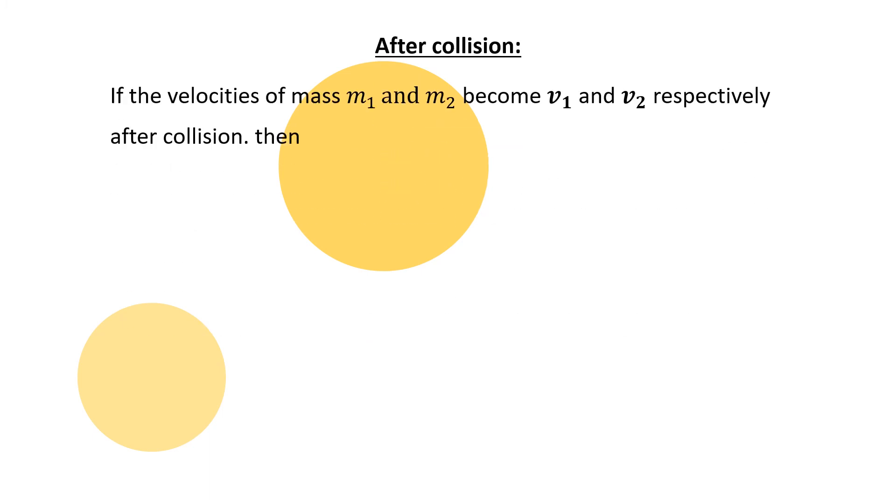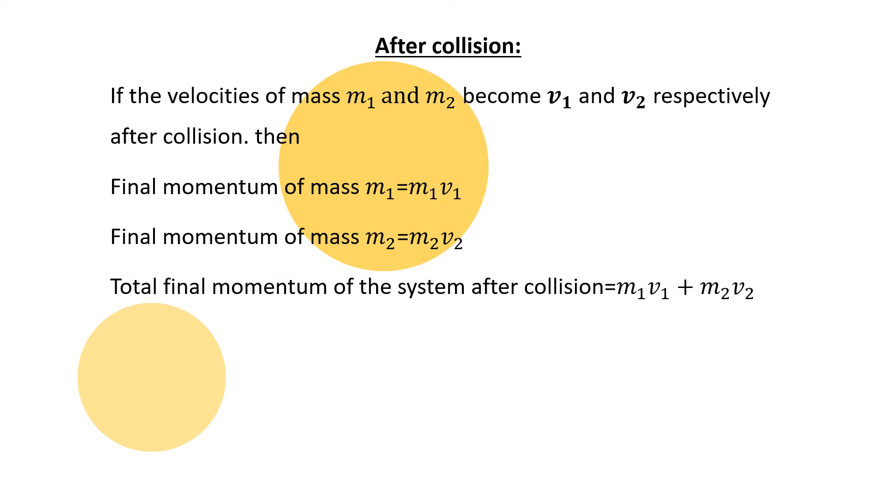So now the velocity becomes V1 and V2 after collision. So final momentum of mass M1 is equal to M1 V1. Final momentum of mass M2 is equal to M2 V2. Total momentum is M1 V1 plus M2 V2. These are the two balls. Here is the velocity of mass M1, V1, and M2, V2.